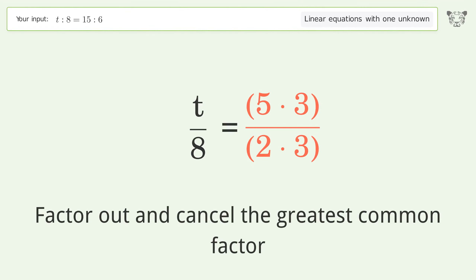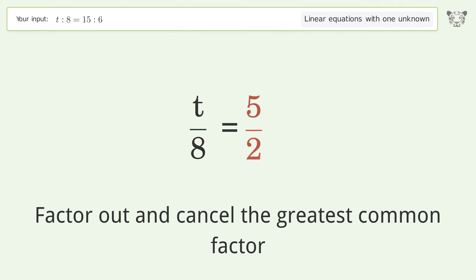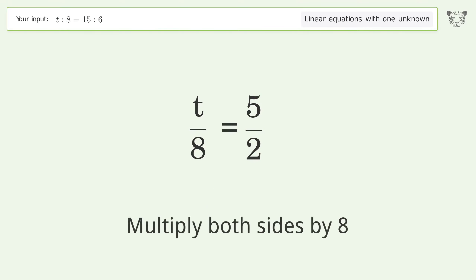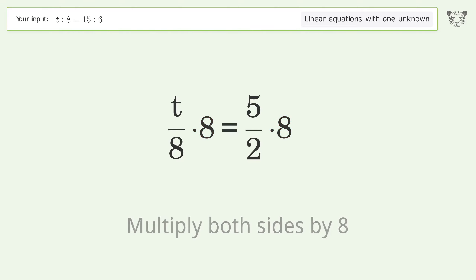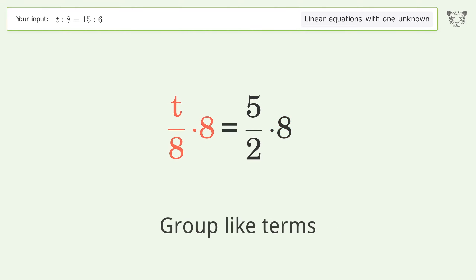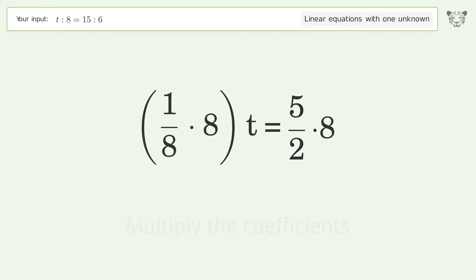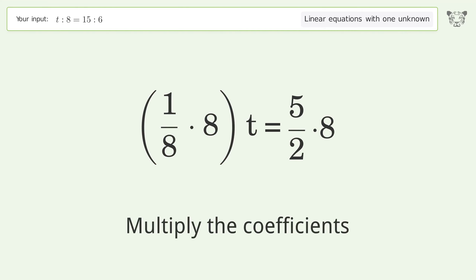Cancel the greatest common factor, isolate the t, multiply both sides by 8, group like terms, and multiply the coefficients.